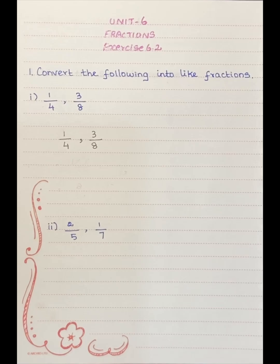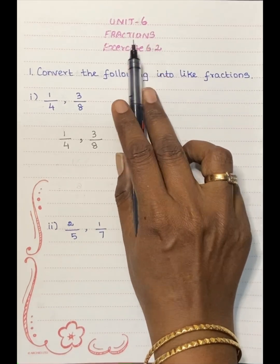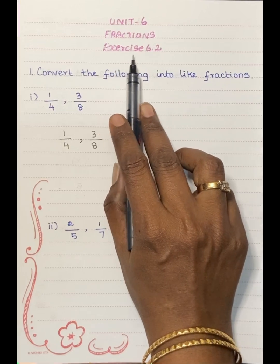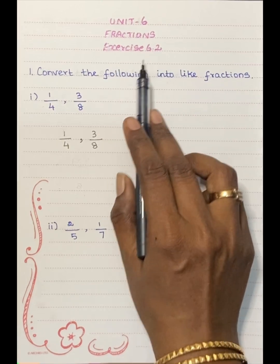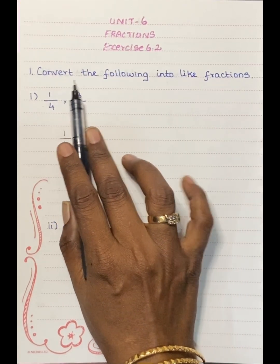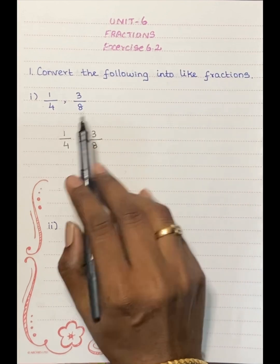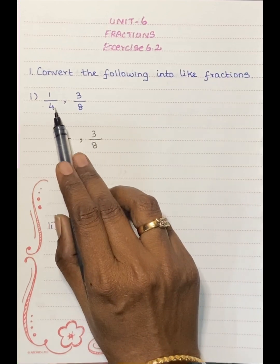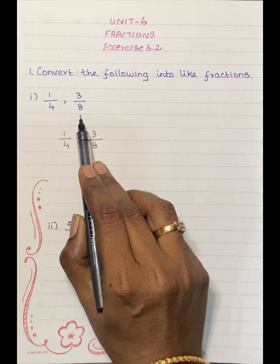Welcome to Math Talk. Today we are going to learn Unit 6 Fractions, Exercise 6.2. First one: convert the following into like fractions. First sum: 1 by 4 and 3 by 8.